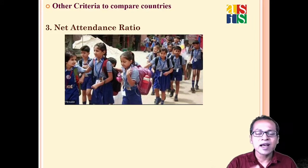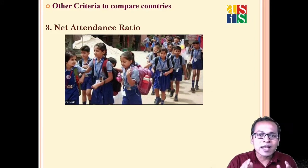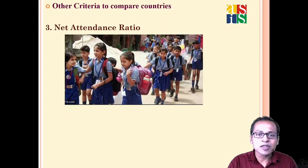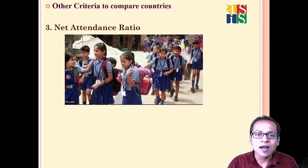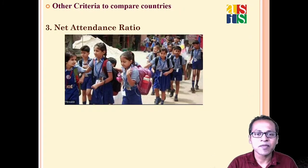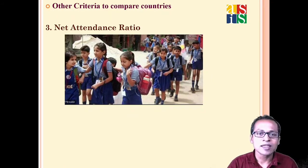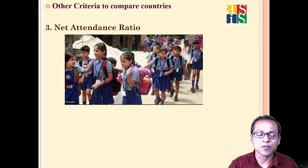There is also net attendance ratio, which concerns students in the age group of 14 and 15 years — generally those studying in 9th or 10th class. Net attendance ratio is the number of students aged 14–15 attending school out of the total students in that age group, expressed as a percentage.